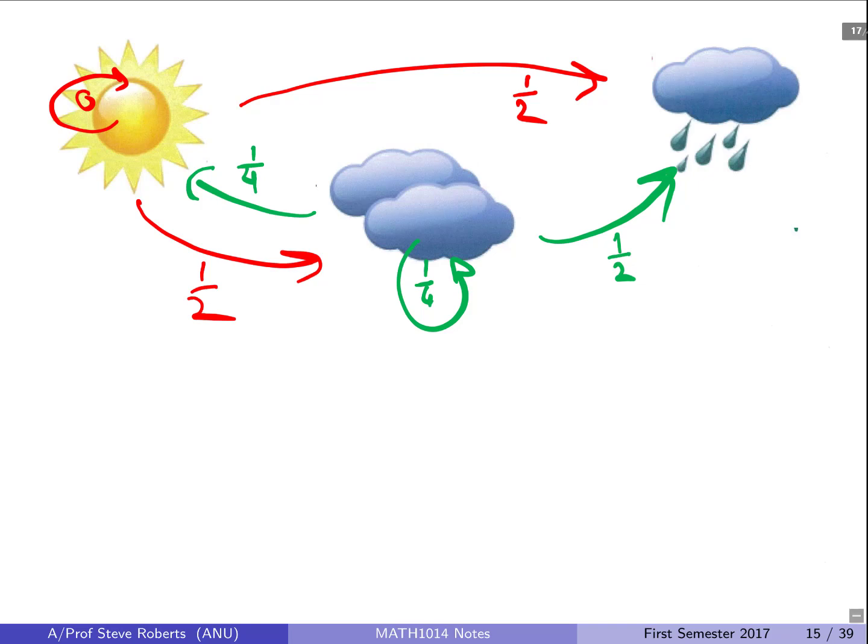And then finally on the rainy days we have a one quarter chance of it being rainy the next day. And we have a one half chance of it just becoming cloudy and we have a what's left one quarter chance of it becoming fine.